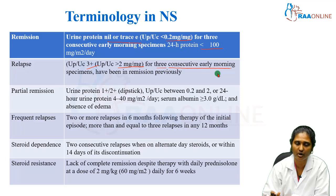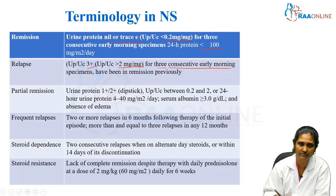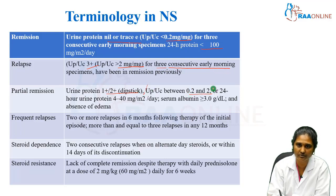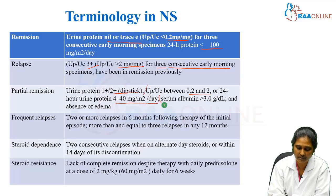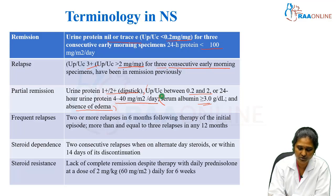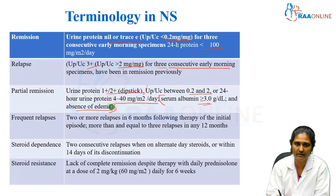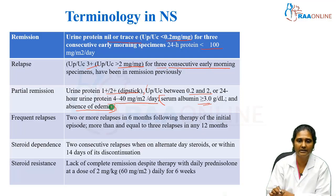Partial remission means not completely stopped the disease progress or fully relapsed — it is somewhere in between. Partial remission is when urine dipstick is between 1 plus to 2 plus, or urine protein creatinine ratio is between 0.2 to 2 milligram per milligram, or 24-hour urine protein is between 4 to 40 milligram per meter square per day, but serum albumin is normal — more than 3 grams — and there is absence of edema. So clinically, edema is not there and albumin is normal but urinary changes are in the borderline. That is considered to be partial remission.